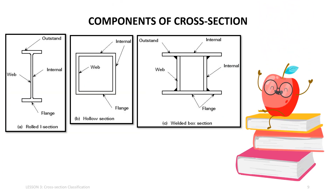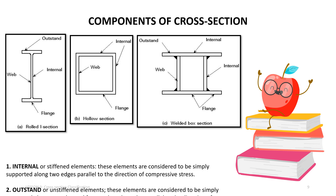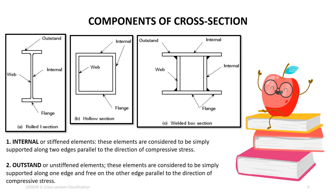A cross section is composed of different plate elements, such as web and flanges. Most of these elements, if in compression, can be separated into two categories: internal or stiffened elements, and outstand or unstiffened elements.